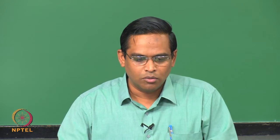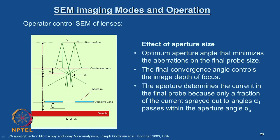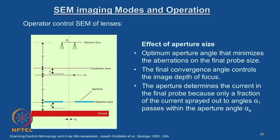If you look at the controls which I talked about yesterday, we will just quickly review this. We started looking at the operator controls in SEM of lenses. We have three primary parameters.